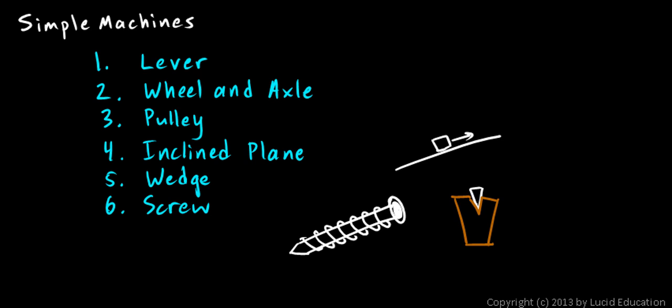Other people would add to the list, and they would say a hydraulic system would also be a simple machine because, like many of these others, it multiplies the force. It changes the force and the distance in a manner very similar to a lot of these. So there's not universal agreement on the list. But this particular list of these six is pretty common.